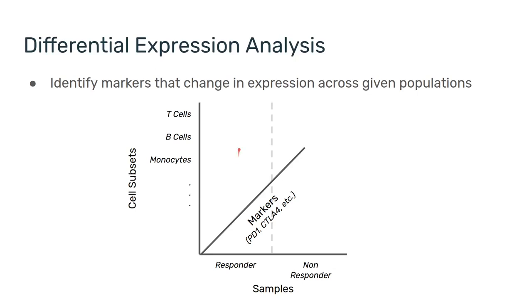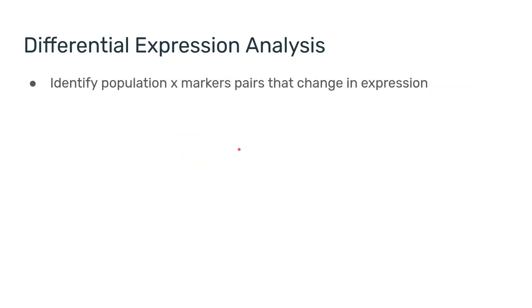So let's reformat the problem a bit. Instead of looking at markers that change across populations, we're going to look at population-marker pairs that change in expression across our experiment.